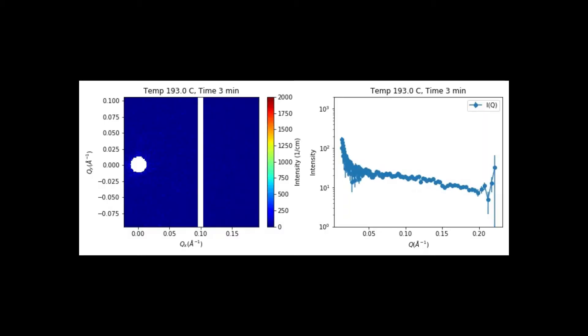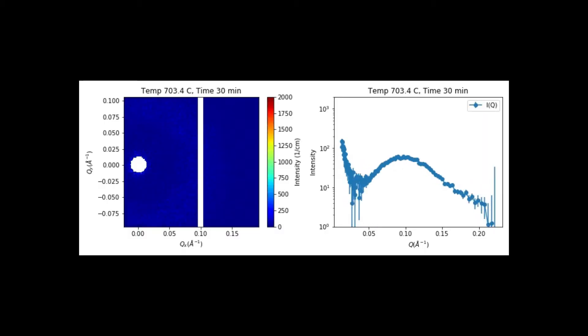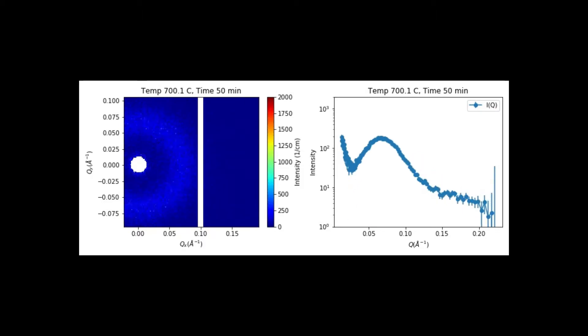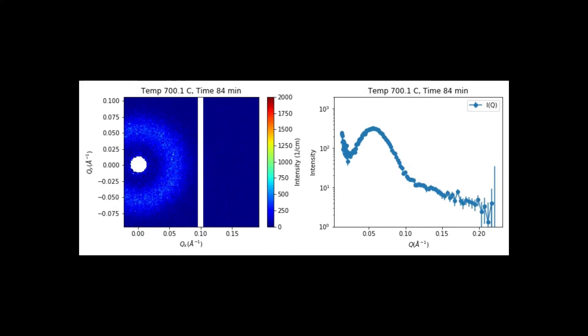What is going to happen in this experiment is that the precipitates could either grow and coalesce and grow in the system, or they could dissolve. In this case we expect them to coalesce and grow.